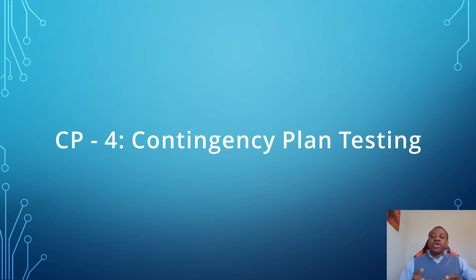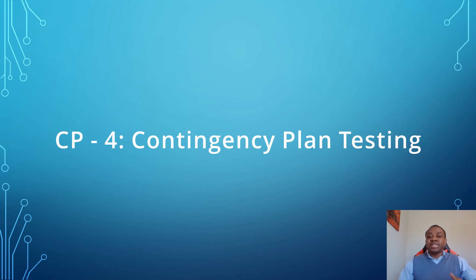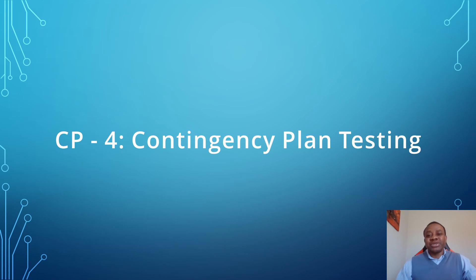Please note that the controls and evidence discussed today are subject to increase. You can request more evidence to satisfy CP2, CP3, and CP4 controls — these are not all the evidence that you can request. There are more evidence items you can also request to satisfy the implementation of these controls. I hope this video is helpful. Please be sure to subscribe to my channel and like this video. Thank you for watching.